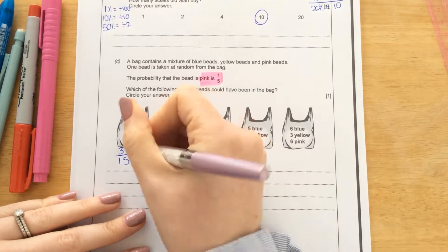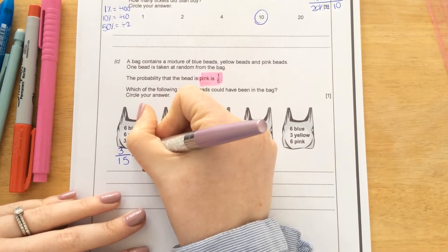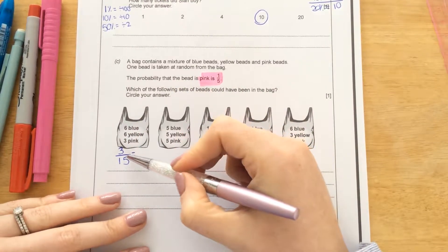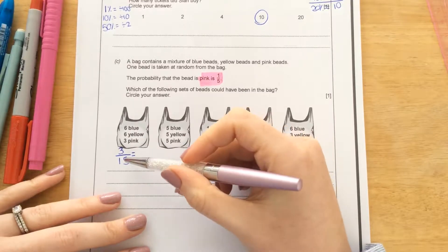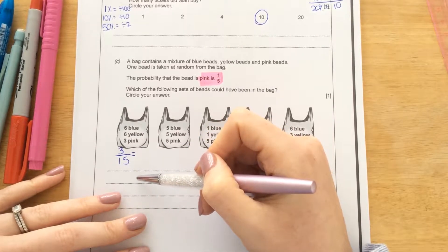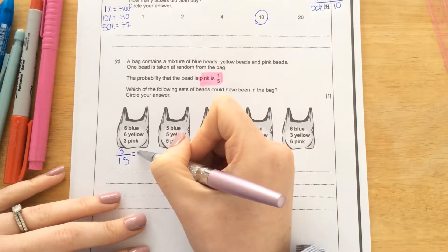So to work out whether that is 1 fifth of the total amount, we can just cancel it down. So is 3 one fifth of 15? So to cancel fractions, you find a number that goes into both 3 and 15. So if we use 1, then the fraction would end up looking exactly the same.